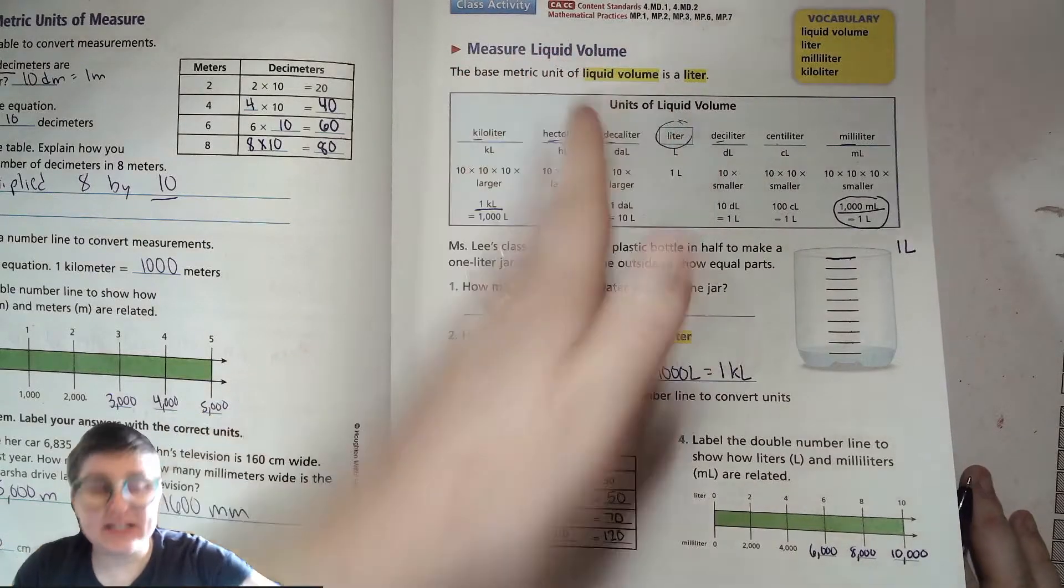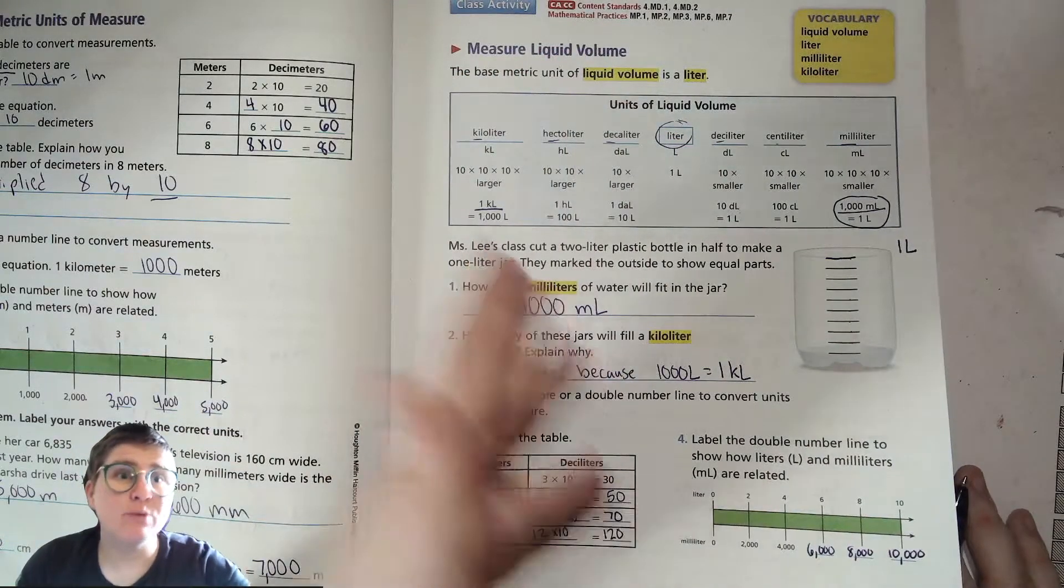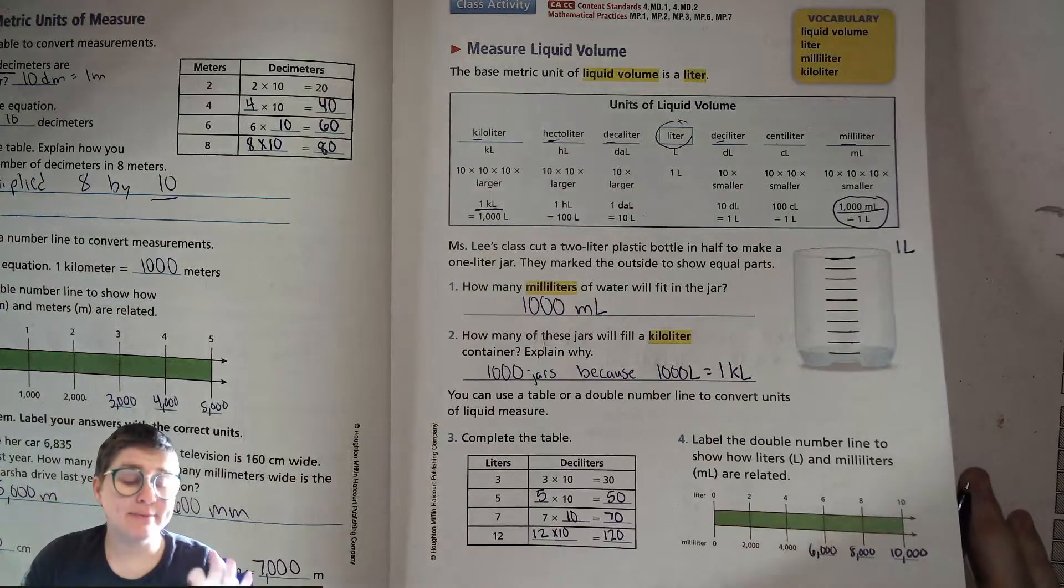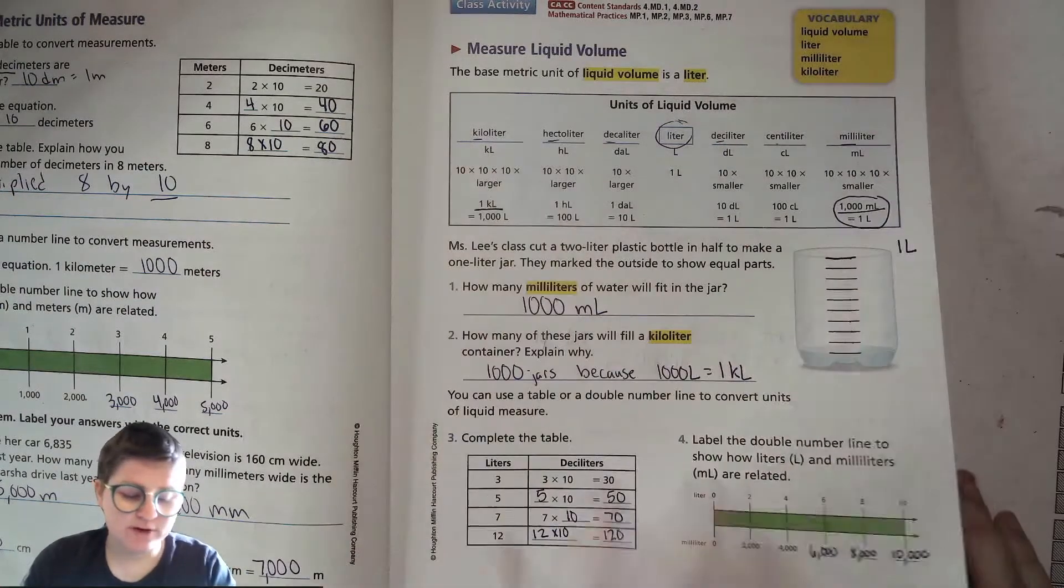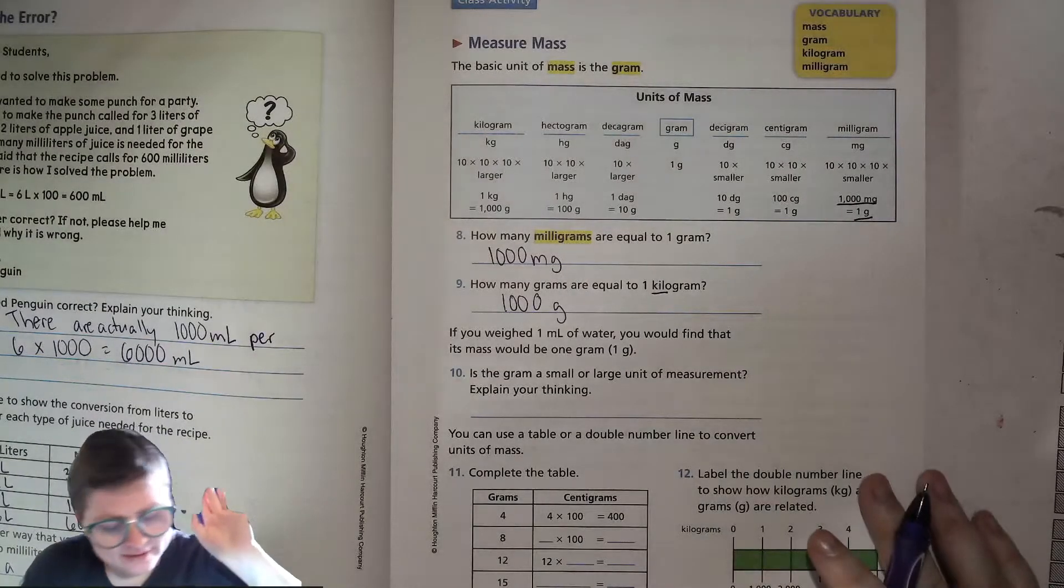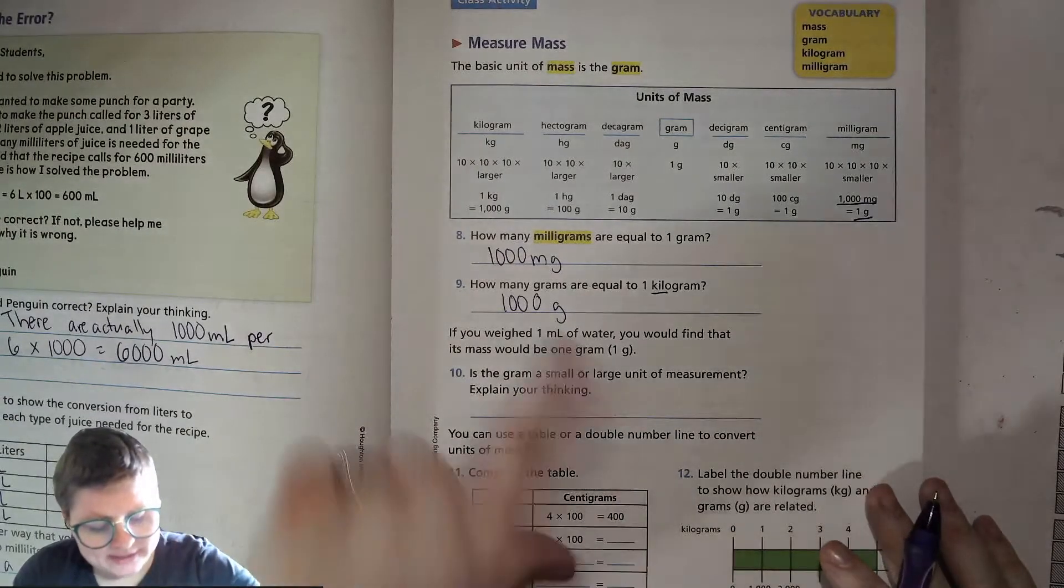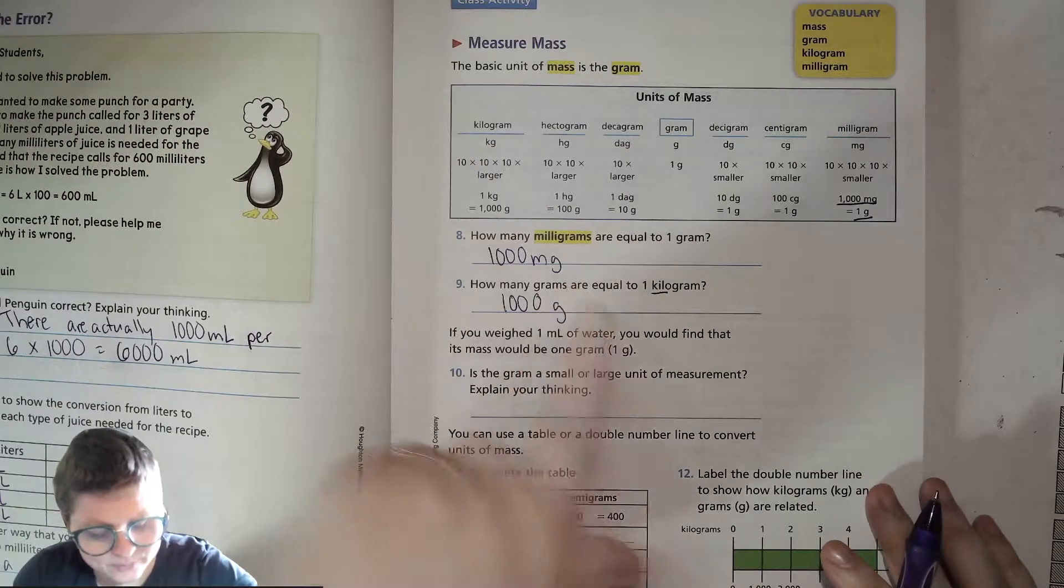So some liquids might weigh less or more, but take up the same amount of space as water. But it's really cool that one milliliter weighs one gram.